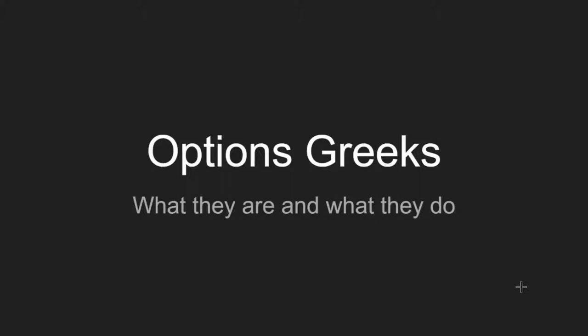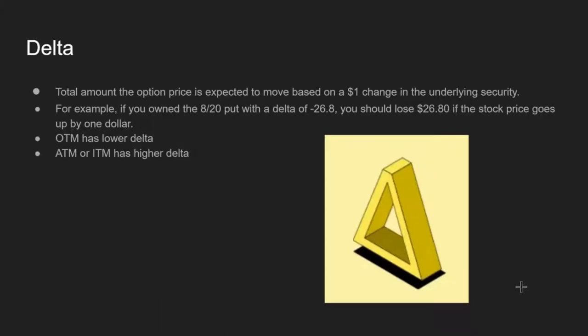What's going on guys, Preston here with Xtrades, and today we are going to be talking about options Greeks — what they are and what they do. The first options Greek is pretty important: it's Delta. Delta is the total amount the option price is expected to move based on a $1 change in the underlying security. In easy terms, it's basically how much your option will move when the underlying stock price goes up a dollar.